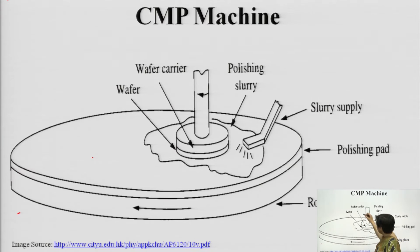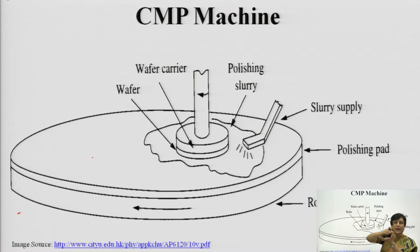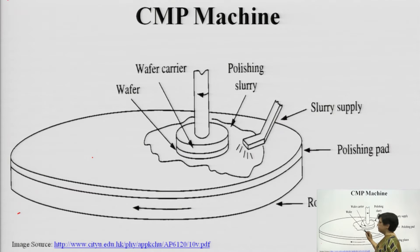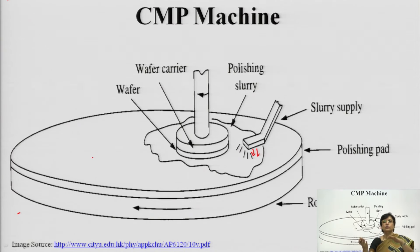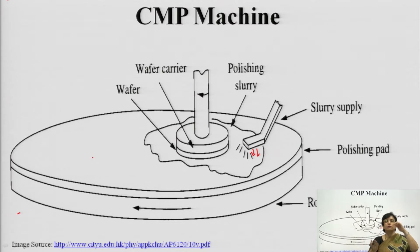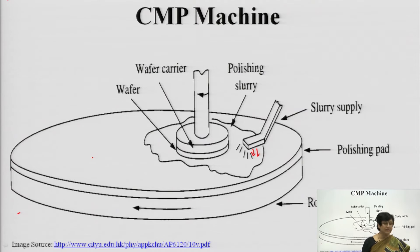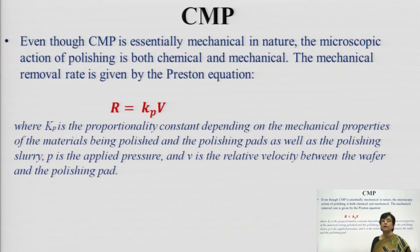The wafer carrier holds the wafer using a vacuum system, firmly placed at exactly the right angle. Slurry is supplied to create adequate friction so that the wafer gets the rotational movement of the polishing pad, and the particular portion is continuously removed so that you get a perfectly flat surface on the wafer.